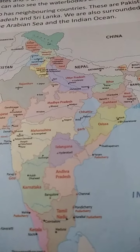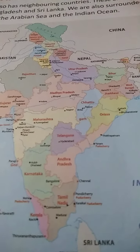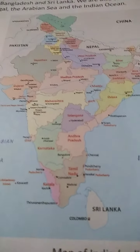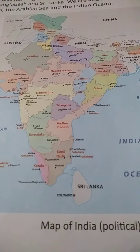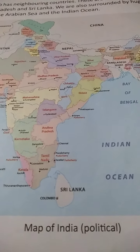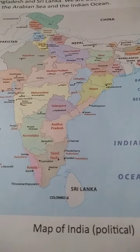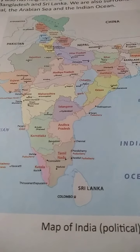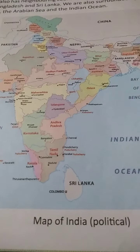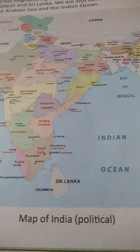This is a picture of the India political map. India has 28 states and 9 union territories. Our country also has neighboring countries.